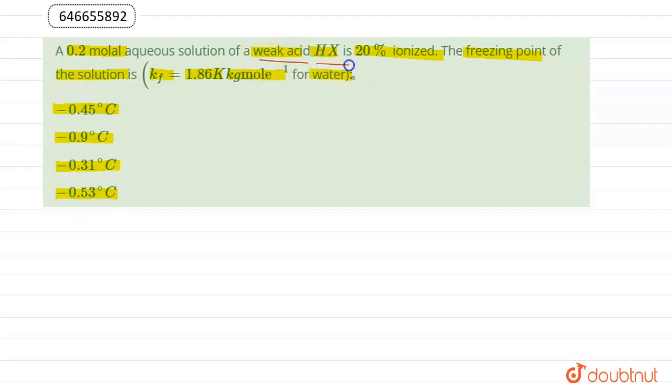In the question we are given a weak acid. Weak acid is incompletely ionized in aqueous solution, so we can write the equation as HX giving H positive and X negative ion. We are getting two ions in this solution and we have alpha is equal to 20 percent.